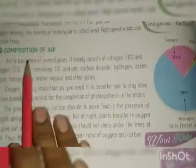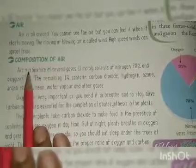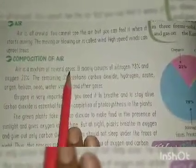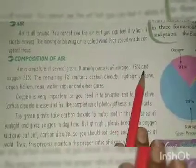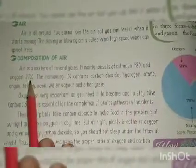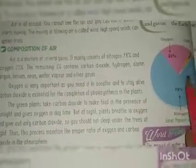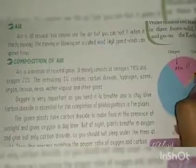Now let's look at the composition of air. Air is a mixture of several gases. It mainly consists of nitrogen 78%, oxygen 21%, and the remaining gases make up 1%. You can see this in the diagram showing gases present in air — oxygen, nitrogen, and other gases.